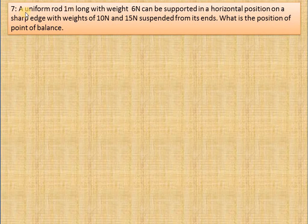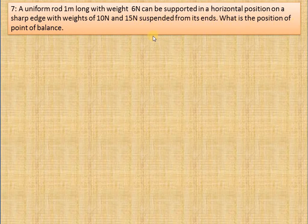The statement is: A uniform rod 1 meter long with weight 6 newton can be supported in a horizontal position on a sharp edge, with weights of 10 newton and 15 newton suspended from its ends. What is the position of the point of balance?